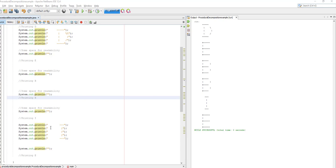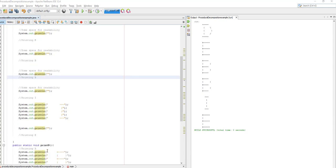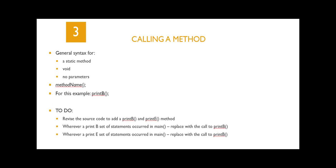After you've created your methods, the next thing you need to consider is where you're going to call a method. The syntax for calling a static void method with no parameters is the simplest: you simply write the method name followed by parentheses and a semicolon — for example, printB. Let's add this to our logic.